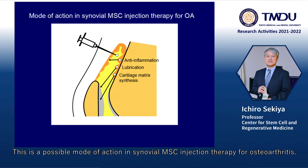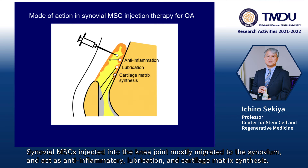This is a possible mode of action in synovial MSC injection therapy for osteoarthritis. Synovial MSCs injected into the knee joint mostly migrated to the synovium and act as anti-inflammatory, lubrication, and cartilage matrix synthesis agents.